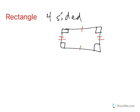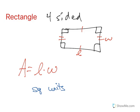So we have four sides, four right angles, opposite sides congruent. When we find the area, area is length times width, where the length is one side, the width is the other. The other thing to remember with area is that we are in square units.